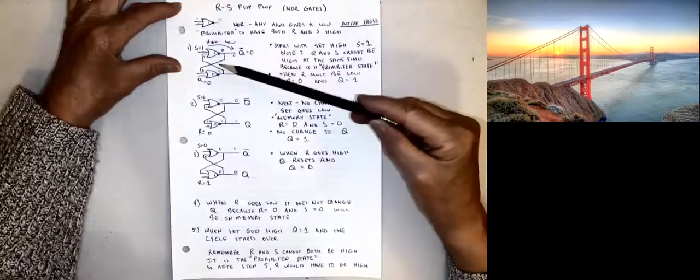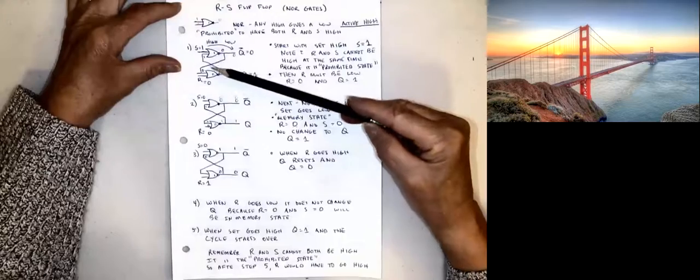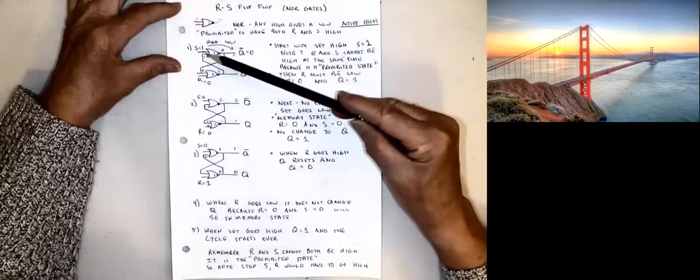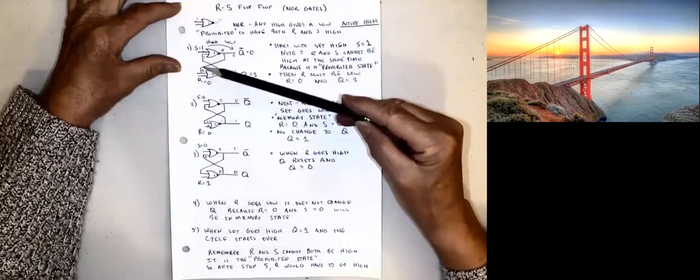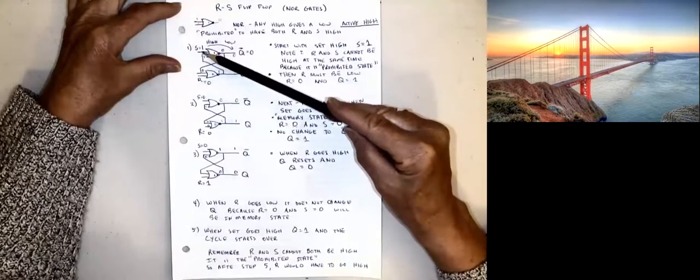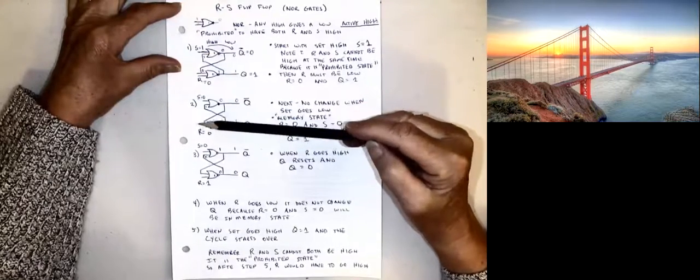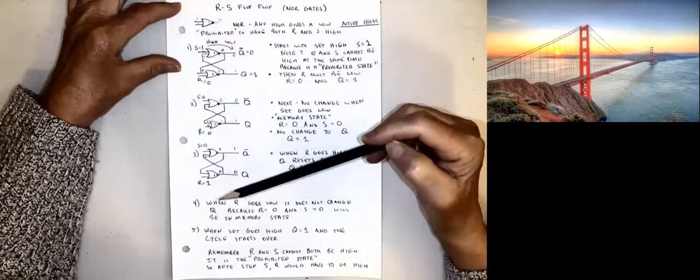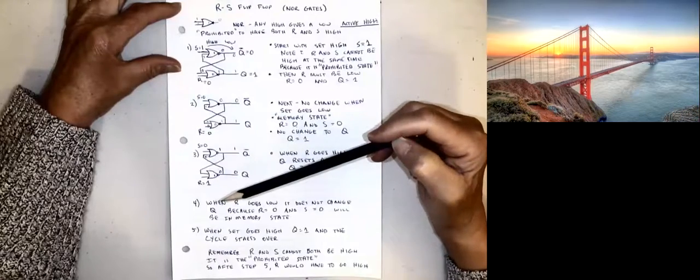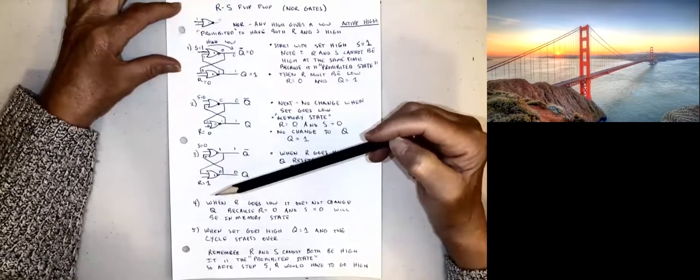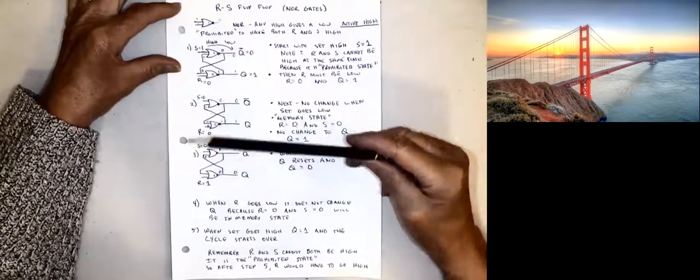So I could start this with both lows, or I could start it with one high and one low. The purpose of S is to set Q to high, whether we have a NOR gate or a NAND gate flip-flop.